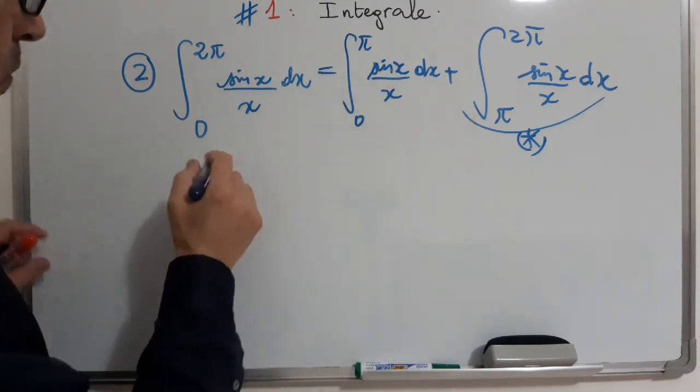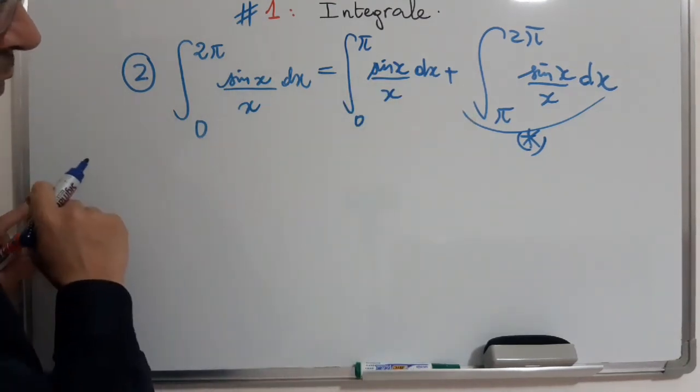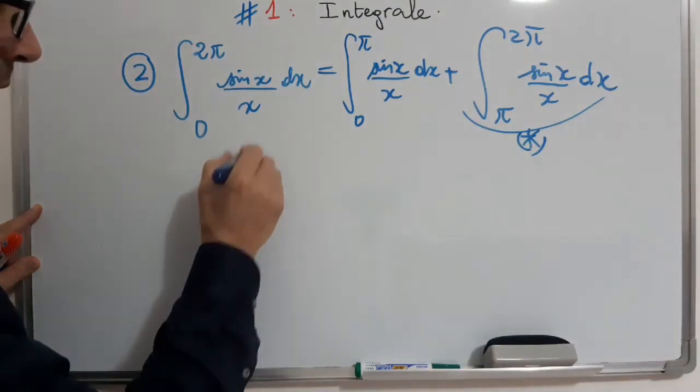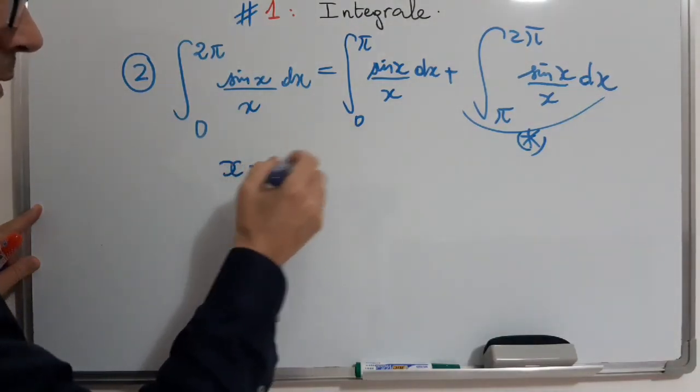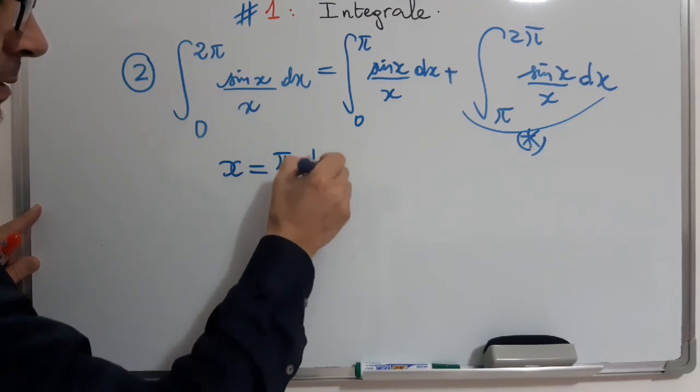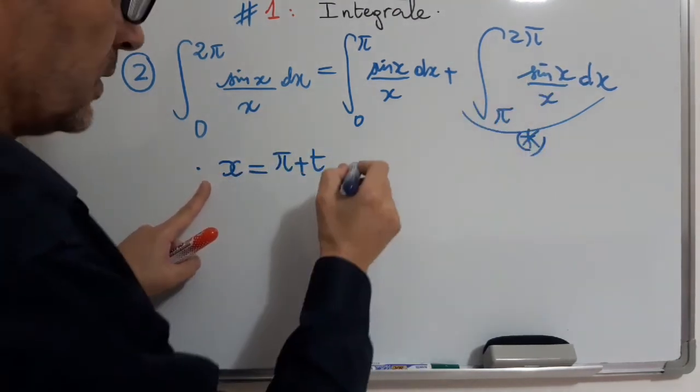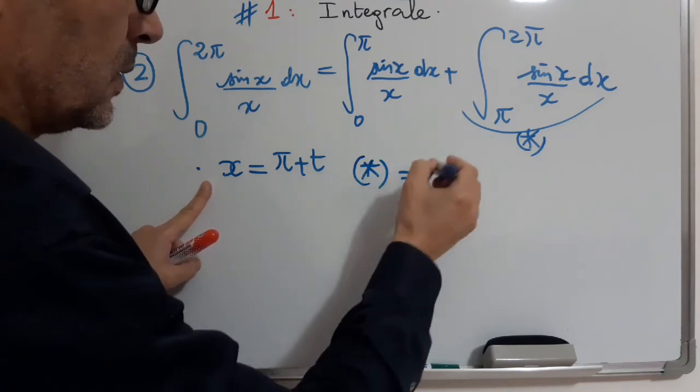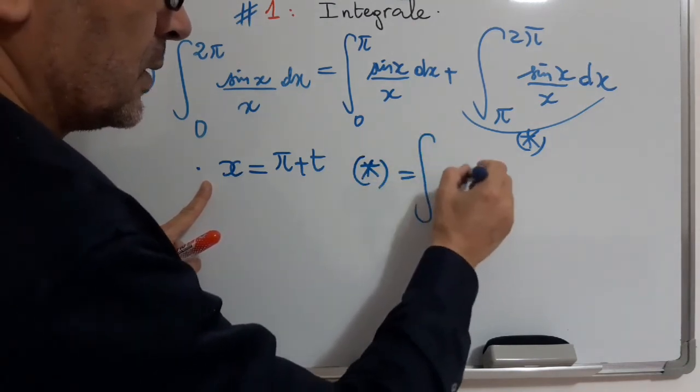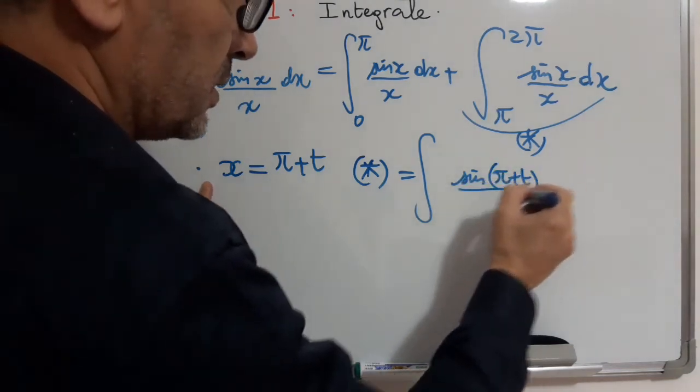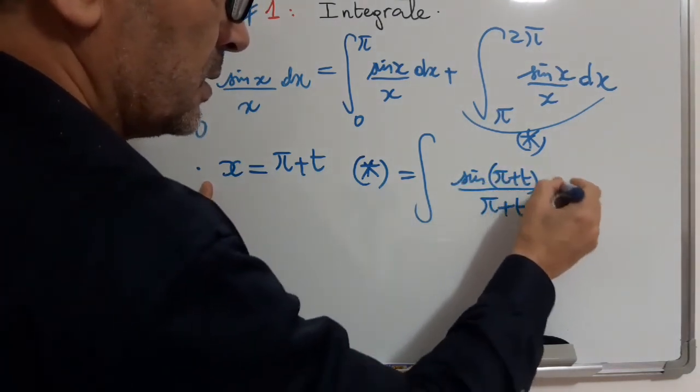The easy step is to do the following variable change. So, we take x equals π plus t. So, we will have this integral will become sin π plus t over π plus t dt.